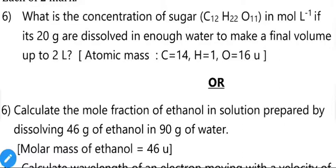Next question: what is the concentration of sugar C₁₂H₂₂O₁₁ in mol per liter if 20 grams are dissolved in enough water to make a final volume of 2 liters? Atomic masses given: C=14, H=1, O=16. From this we have total solution volume of 2 liters and solute mass of 20 grams. First, find the number of moles of sugar.